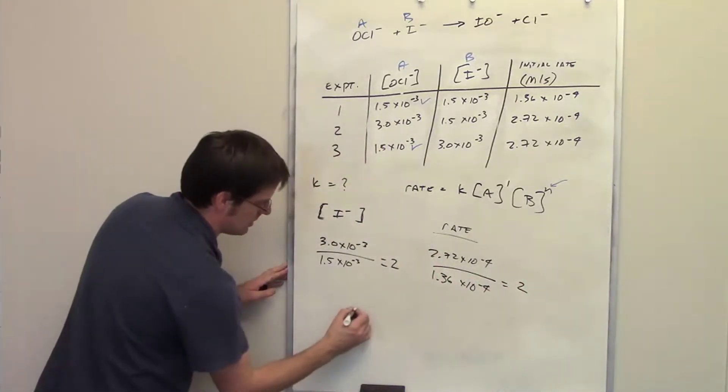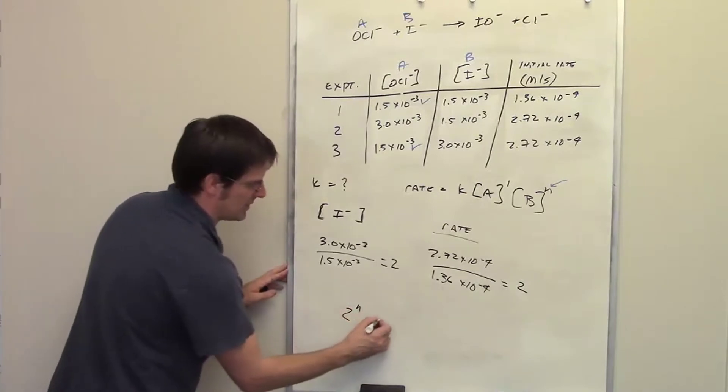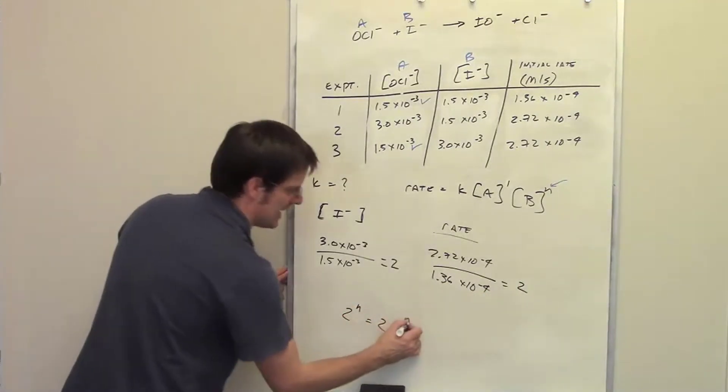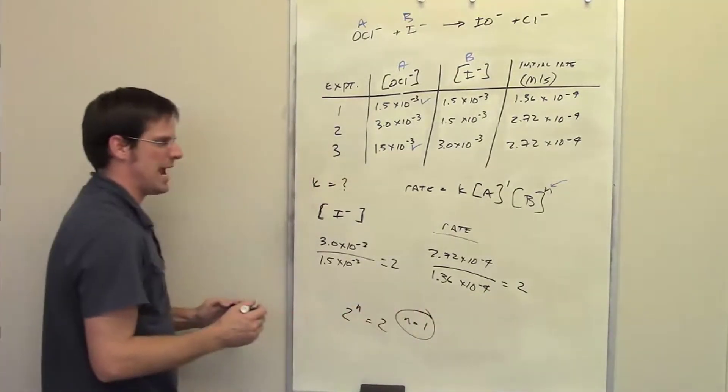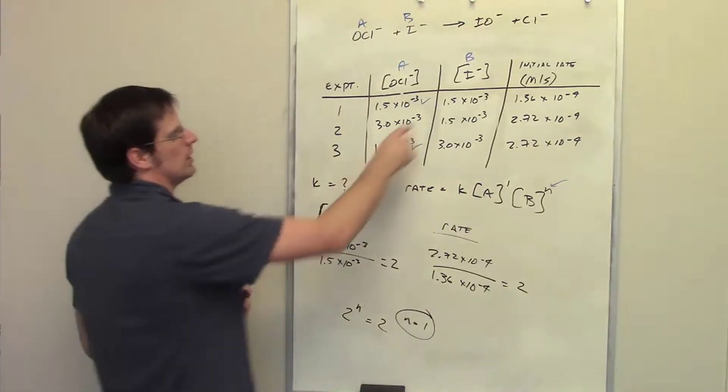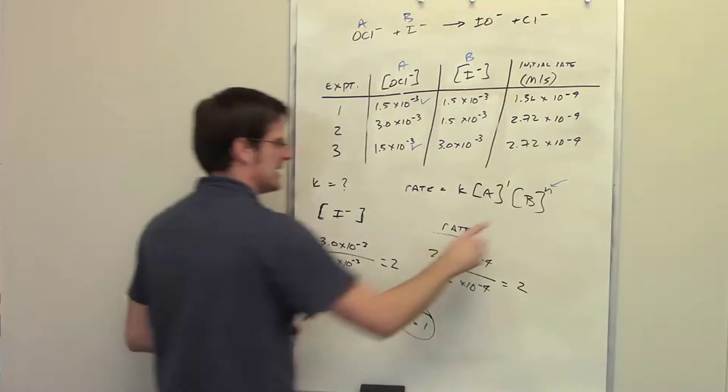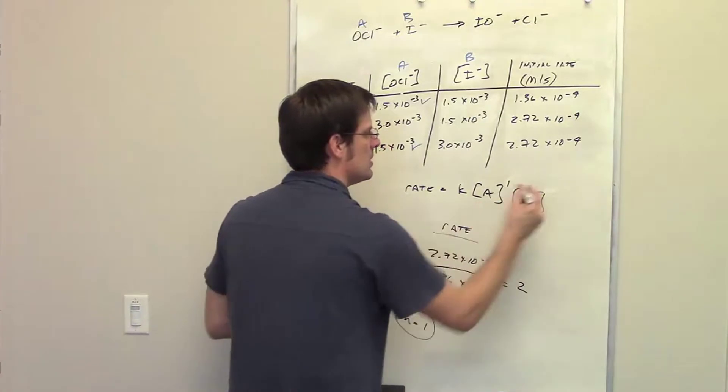So now all I do is take this number, raise it to the nth power and set it equal to that number. What is n? n is 1. 1 is the reaction order with respect to component B, the iodide. So I can change this n up here to 1.